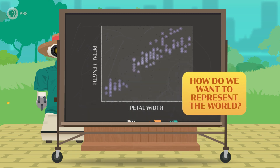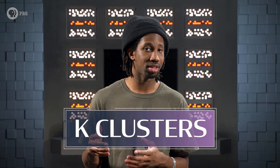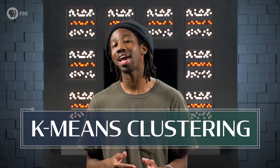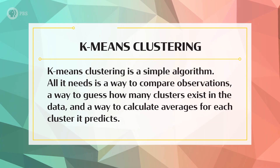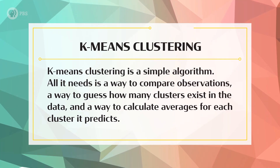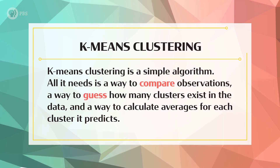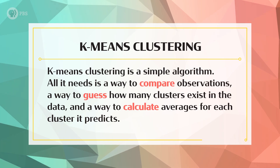And second, how do we want to represent the world? We're going to stick to a very simple assumption: there are clusters in our data. Specifically, we're going to say there are some number of groups called k clusters, but we don't know where they are. To help us, we're going to use the k-means clustering algorithm. K-means clustering is a simple algorithm. All it needs is a way to compare observations, a way to guess how many clusters exist in the data, and a way to calculate averages for each cluster it predicts. In particular, we want to calculate the mean by adding up all data points in a cluster and dividing by the total number of points.